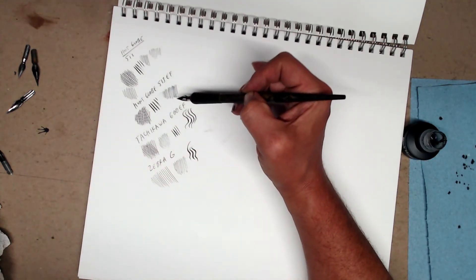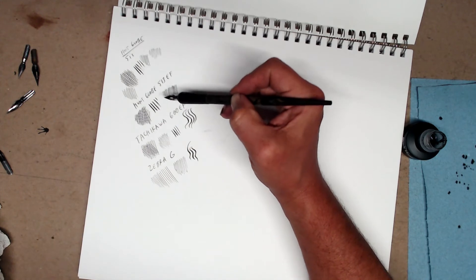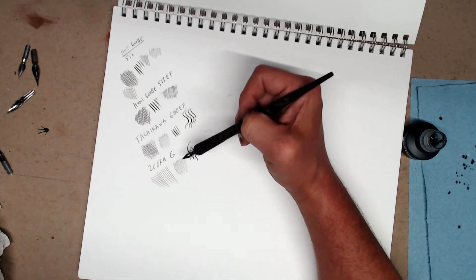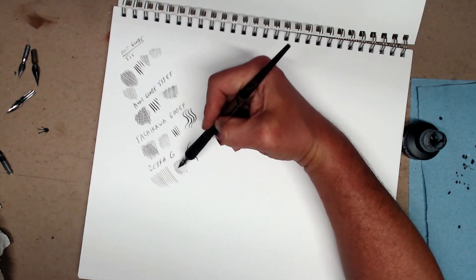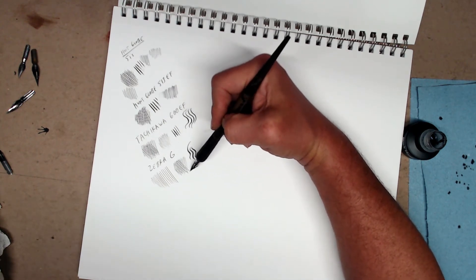And then if you want to invest in other nibs, buy these too. The Zebra G, again, is a little more difficult to use, but you get used to it. And the more you do pen and ink, the easier it becomes.